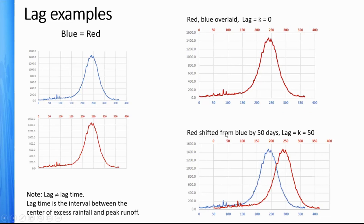If I shift the red from the blue by 50 days, my lag K is 50. We would look at those pairs of data vertically and compare them. Notice that if I shift the red forward, it's the same as shifting the blue back — so there will be a symmetry, which I'll show in just a second.